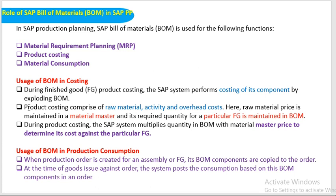Regarding usage of BOM in costing — to finalize finished goods cost, there are two types of prices: Moving Average Price and Standard Price. For finished products, we generally use Standard Price. Standard costing is very important. Product costing comprises raw material cost, activity cost, and overhead cost. Raw material price is maintained in the material master, where two types of prices can be maintained: Standard Price and Moving Average Price.